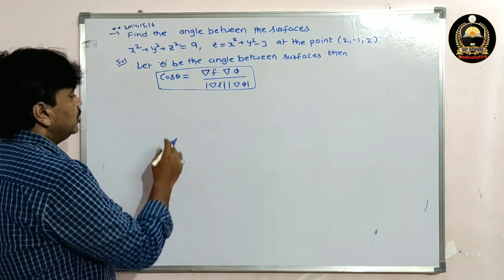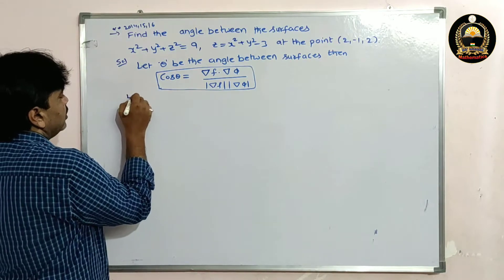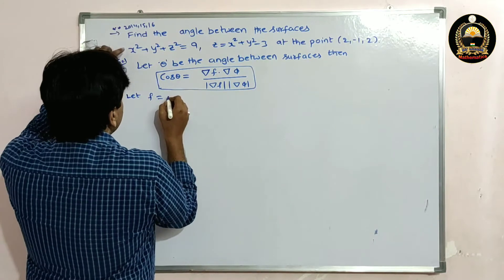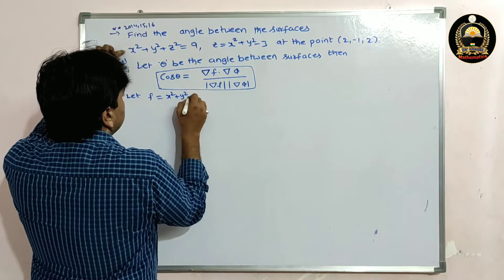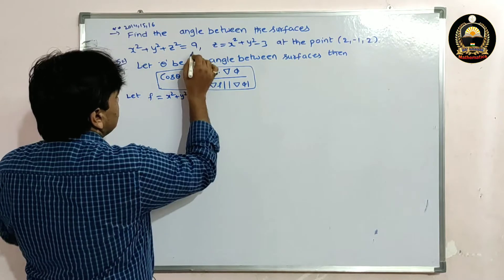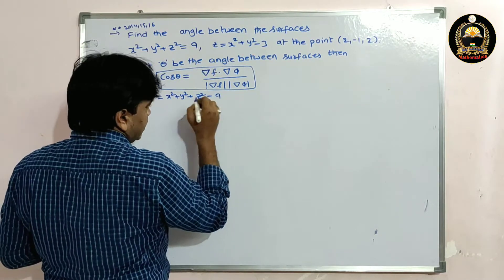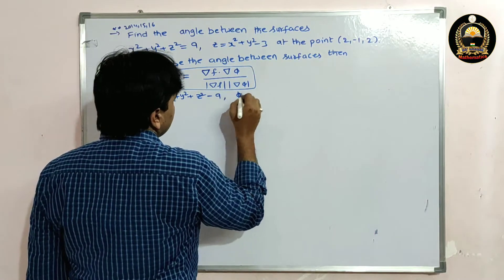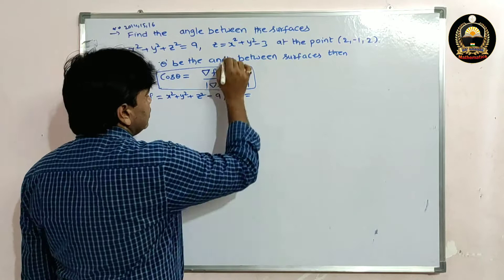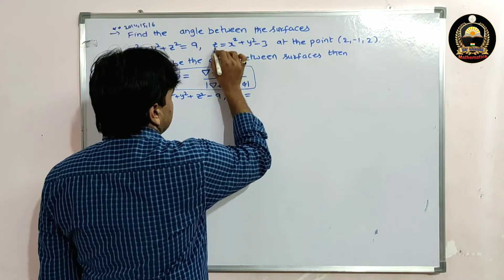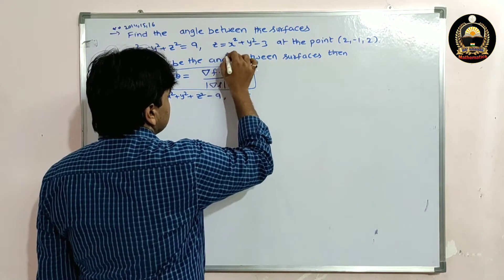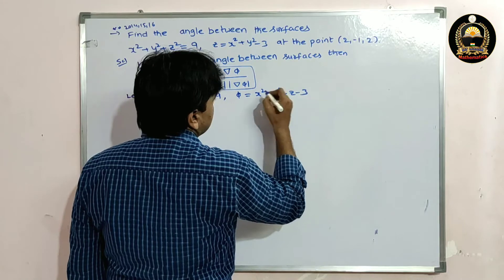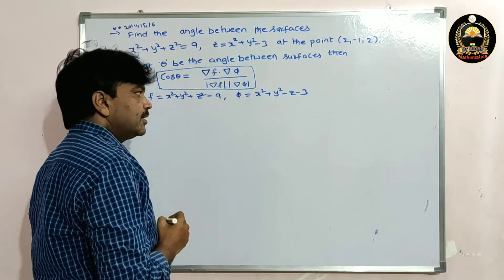Since the problem doesn't name the surfaces, let f = x² + y² + z² - 9 (transposing 9 to the left-hand side), and φ = x² + y² - z - 3 (transposing z to the left-hand side).